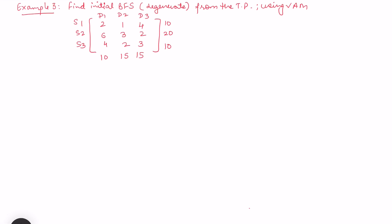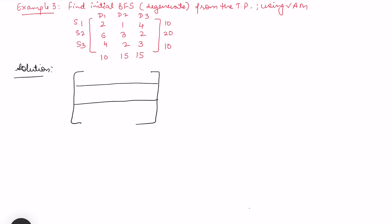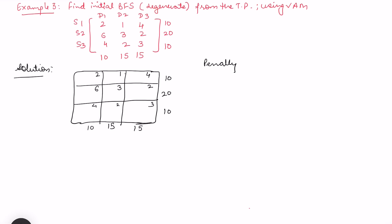Let's do one more example. In this case, we have three sources and three destinations — a 3×3 transportation problem. The costs are: row 1: 2, 1, 4; row 2: 6, 3, 2; row 3: 4, 2, 3. The supply is 10, 15, and 15, and demand is 20, 10, and 10 — it is a balanced transportation problem. We now calculate penalties to start Vogel's Approximation Method.